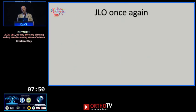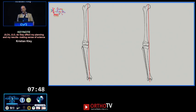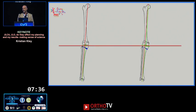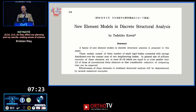Looking at the Mikulic line again — if it does not intersect the knee, you have two options to correct it: a single-level osteotomy or a double-level osteotomy. One disrespects joint line obliquity and the other respects it. It's very important to not just look at the Mikulic line correction but also at the obliquity of the joint you create.